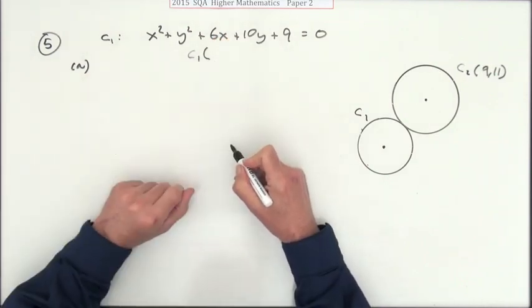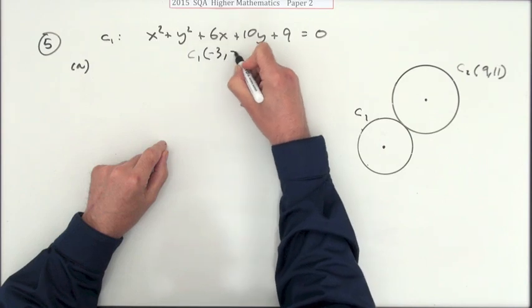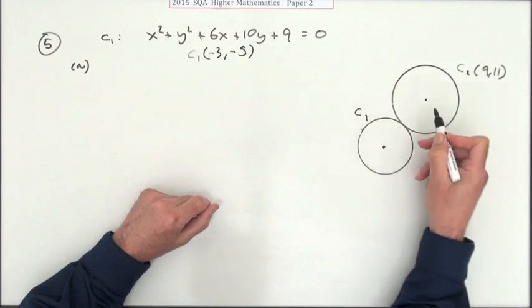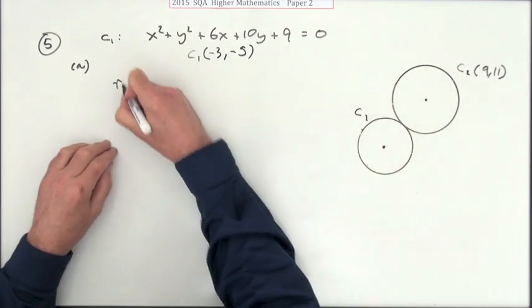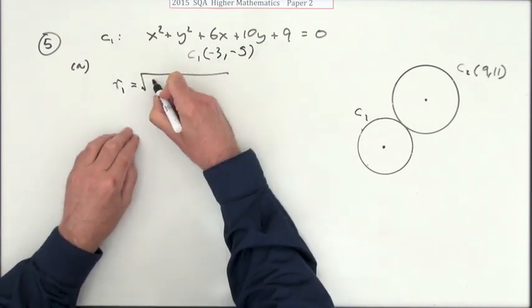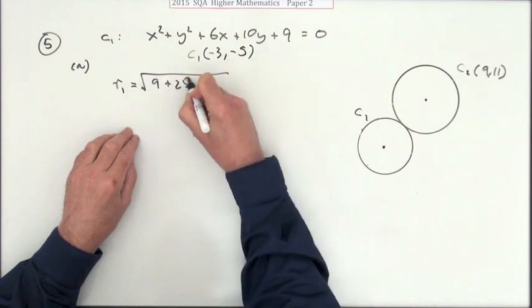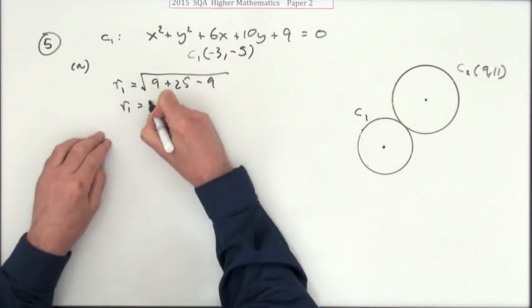The first thing you do is extract the information. What is the center of circle C1? Negative half of those, so it's negative three, negative five. Obviously there's distances involved, so you might as well get the radius at the same time. The radius, which I'll call r1, will be the square root of the squares of the centers. That's 9 and 25, take away the number at the end, so that's root 25. So r1 is 5.